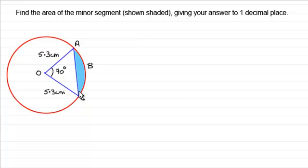To do this, we have a circle with radius 5.3 centimeters, and the angle subtended at the center from the chord AC is 70 degrees.